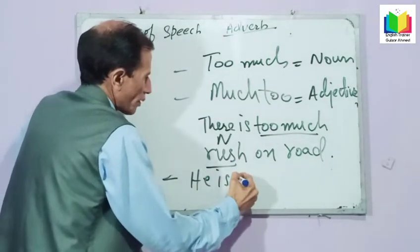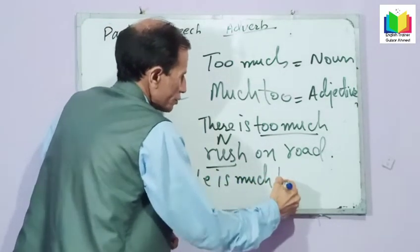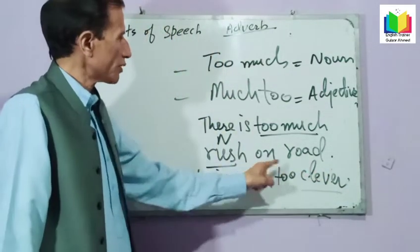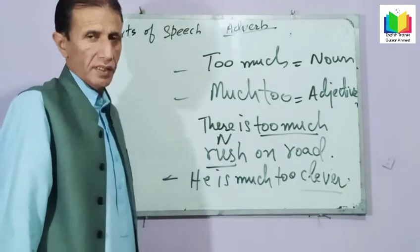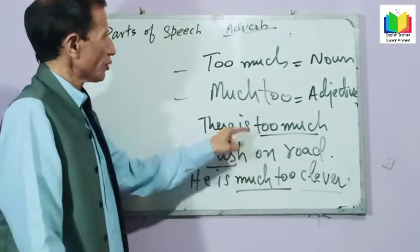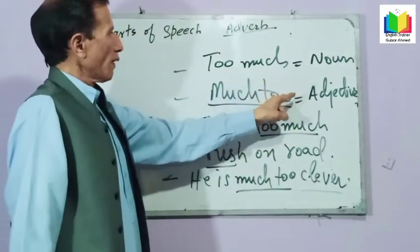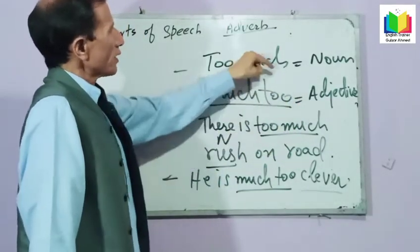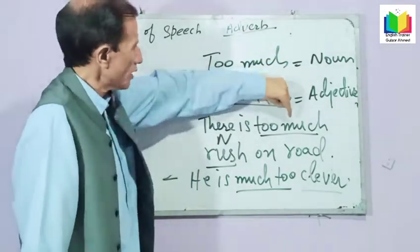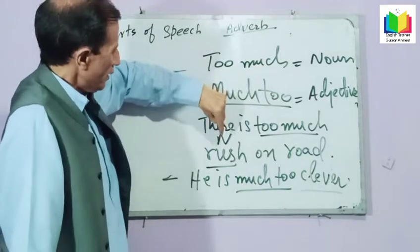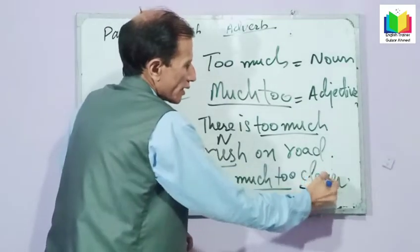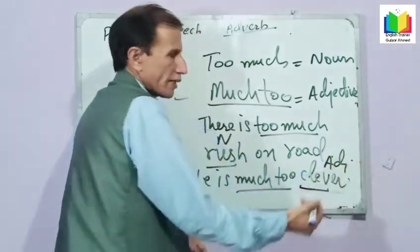He is much too clever. So 'clever' is an adjective. 'Much too' comes before an adjective. There is too much rush — rush is a noun on the road. He is much too clever — 'much too' modifies the adjective 'clever'. So: 'too much' is followed by a noun, and 'much too' is followed by an adjective.